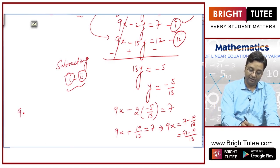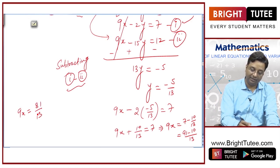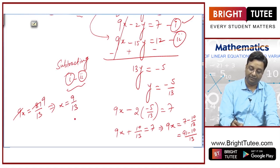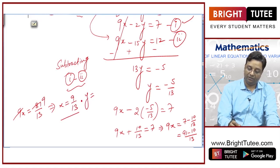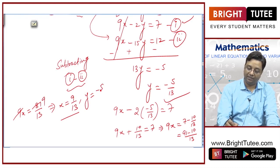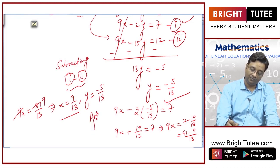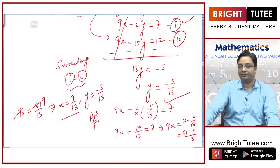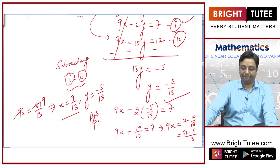So, 9x is equal to 81 by 13. Hence, x is equal to 9 by 13, and y was equal to minus 5 by 13. Hence, this is your answer.